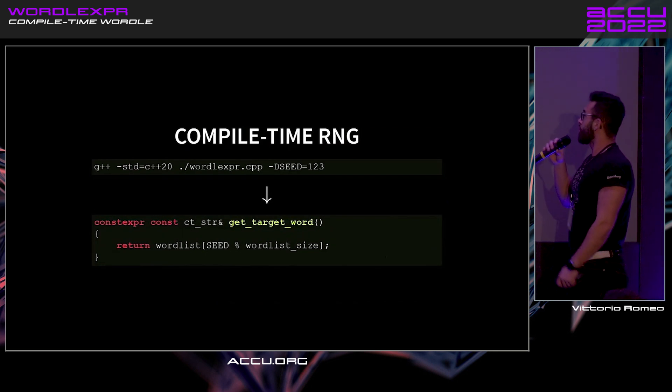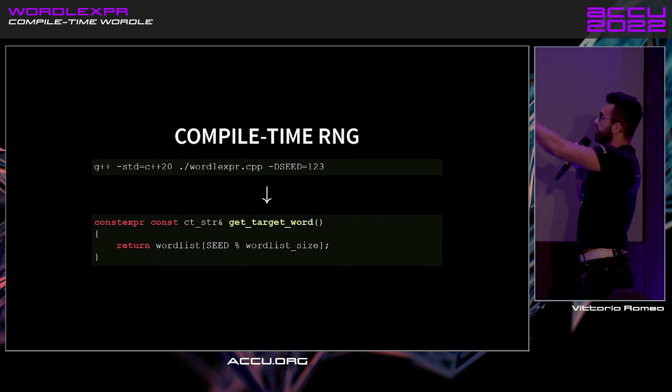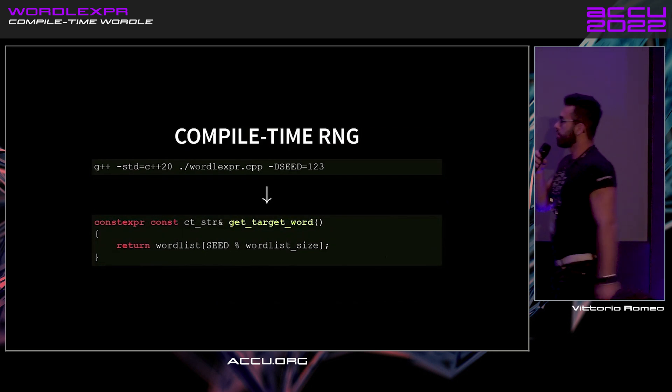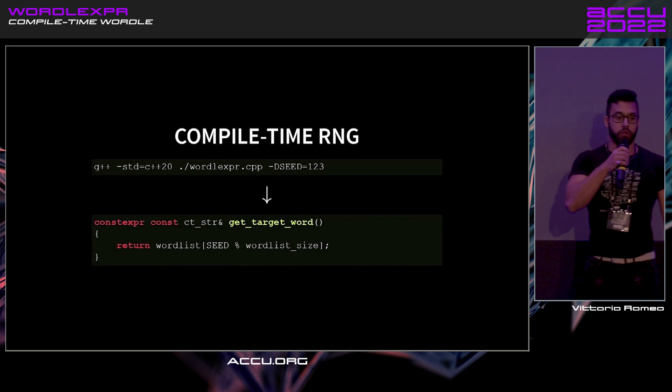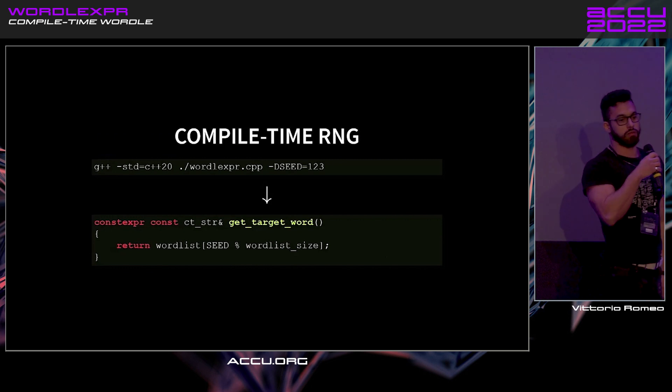Compile-time RNG: provide a seed, use the modulo operator — that's cryptographically secure — and that's done.